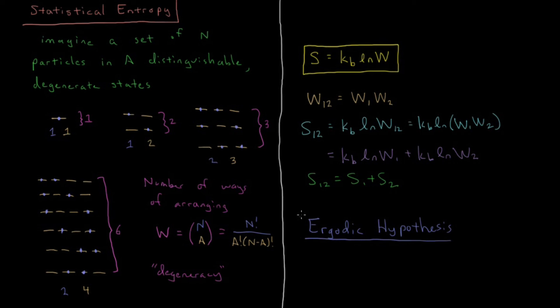So what does this mean? So the ergodic hypothesis is often called the fundamental assumption of statistical mechanics. And it says that all degenerate states are equally likely.